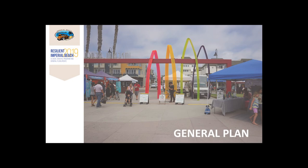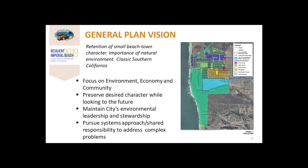Now, a few highlights of the major pieces of the program, starting with the general plan. The overall vision is to retain Imperial Beach's small beach town character and the importance of a natural environment, maintaining the city's theme of being classic Southern California. A cross-cutting theme throughout the general plan is a focus on environment, economy, and community to preserve the city's desired character while looking to the future and to maintain the city's environmental leadership and stewardship. Throughout all elements, we pursue a systems approach looking for shared responsibility to address complex problems.